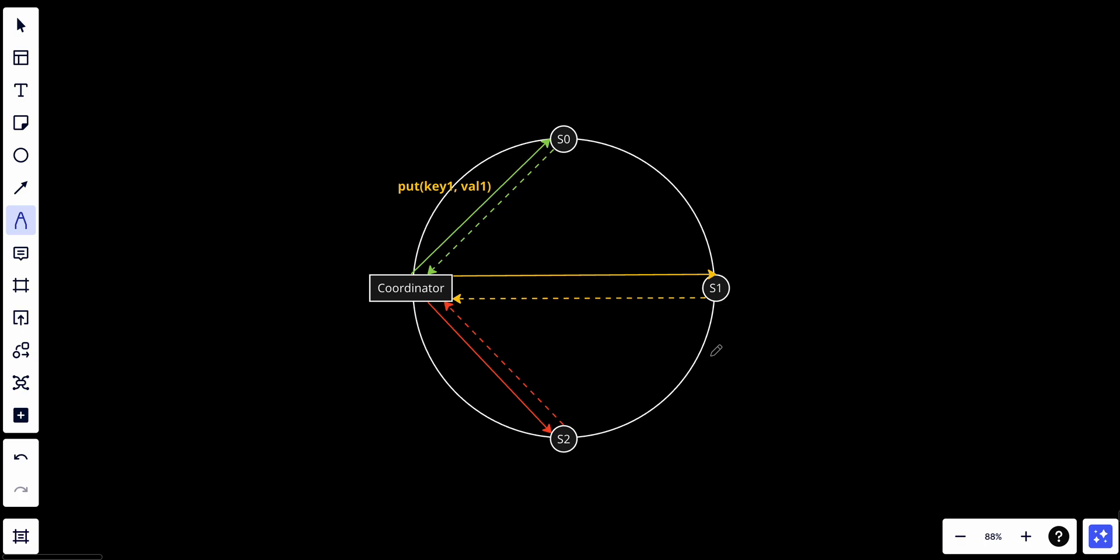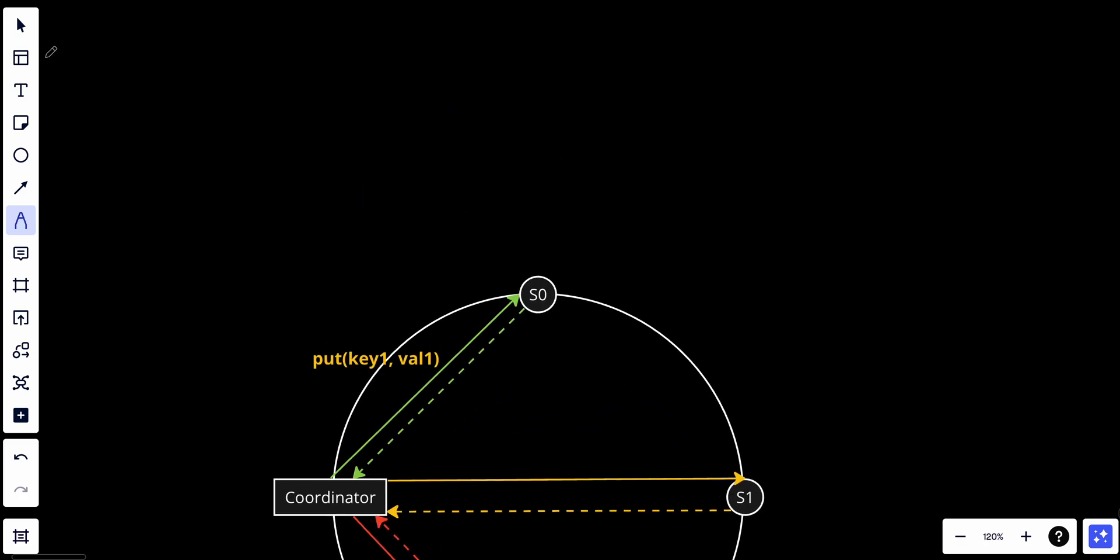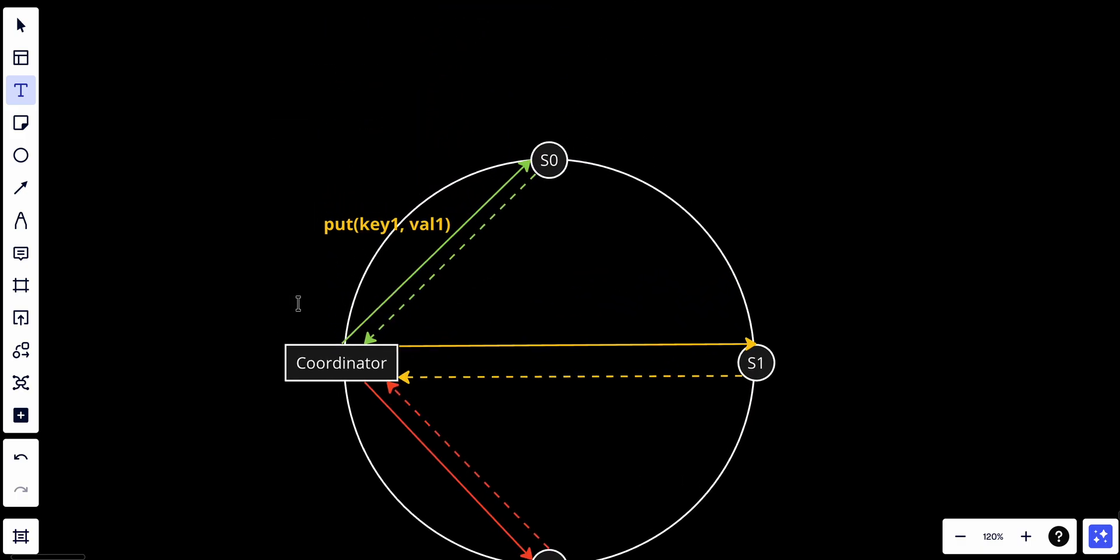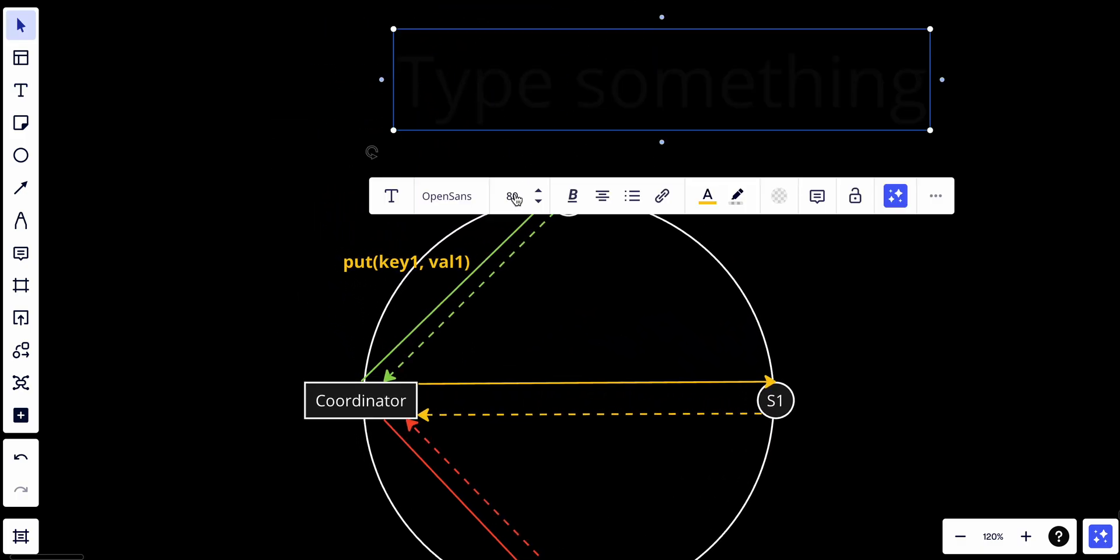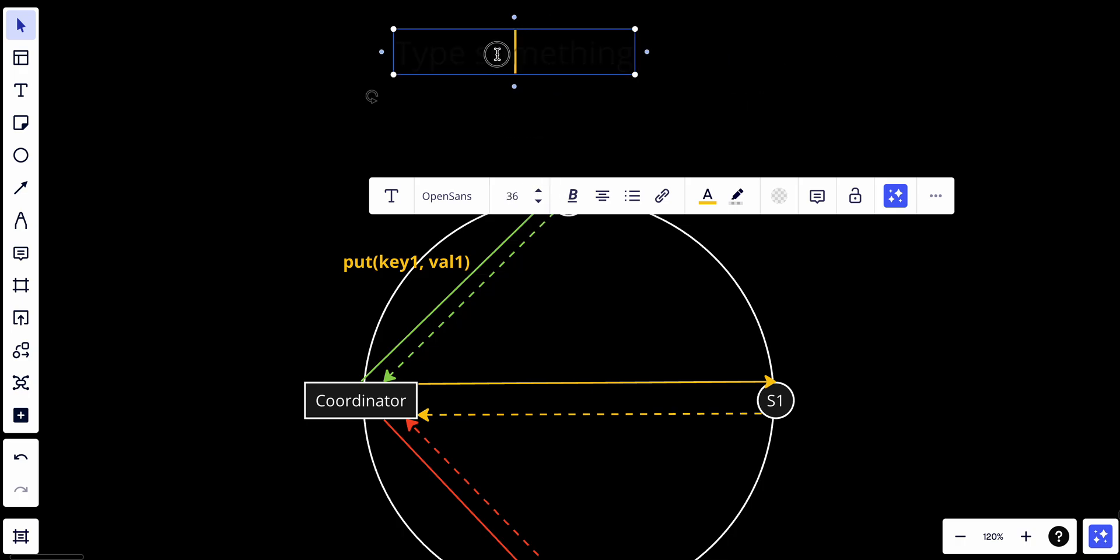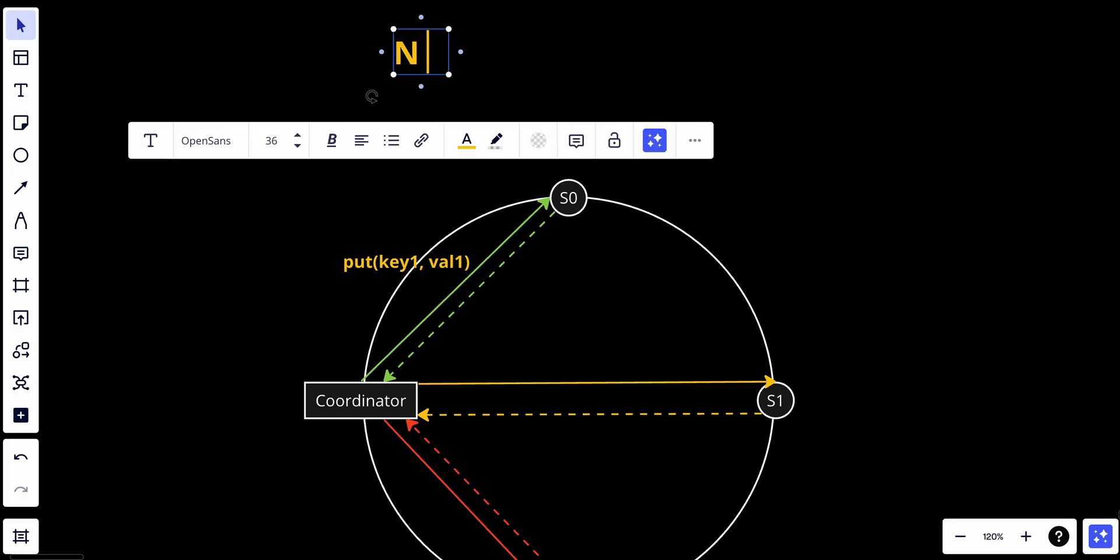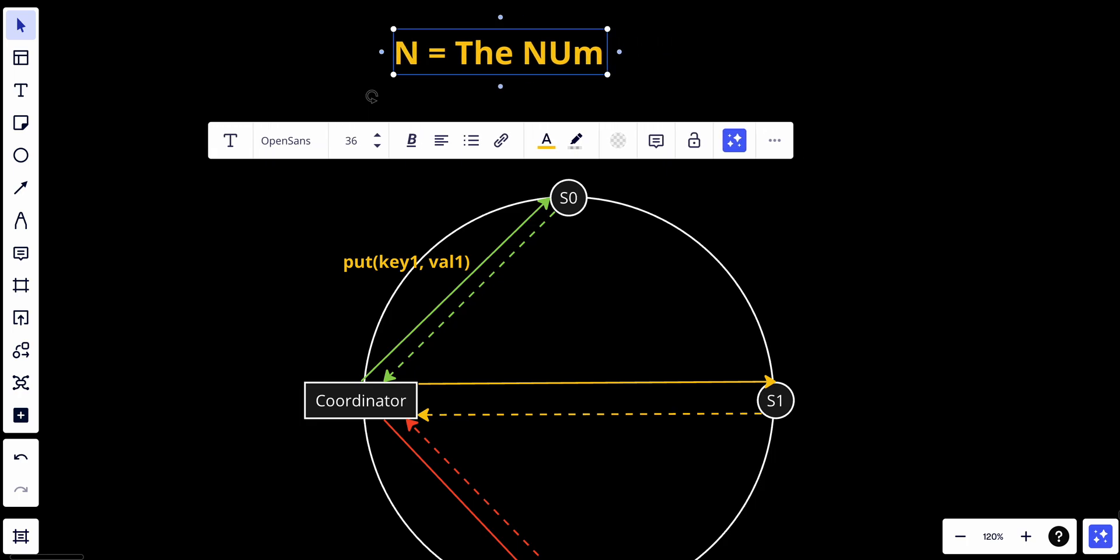Let's talk about how it works. It's just a voting mechanism. Before we have to clarify three important variables, we have N which will be equal to the number of replicas.